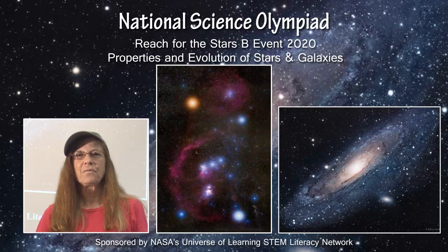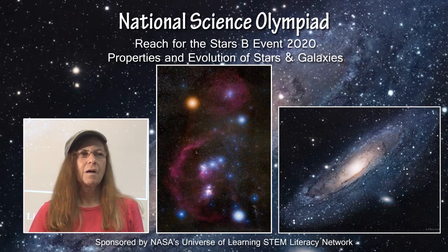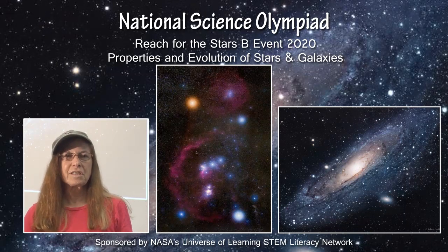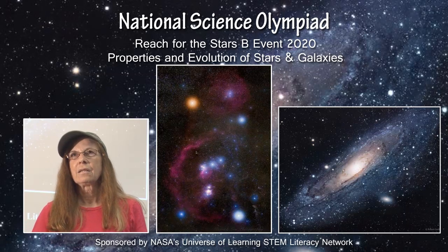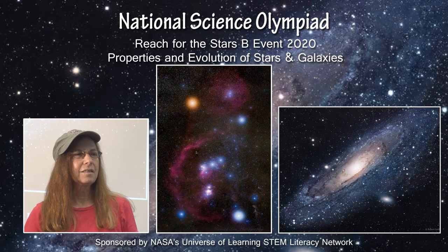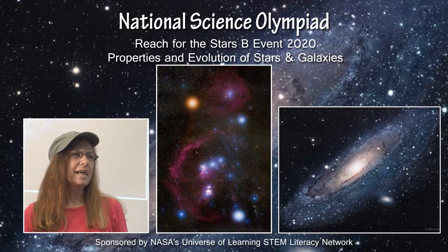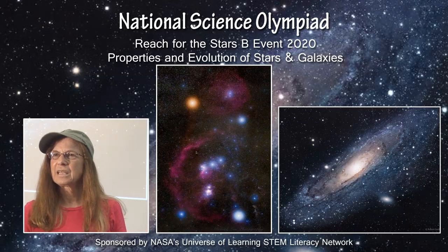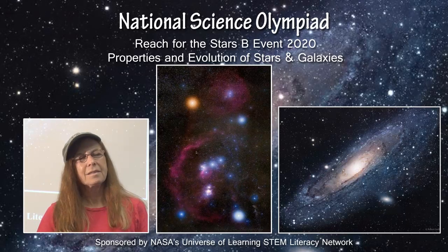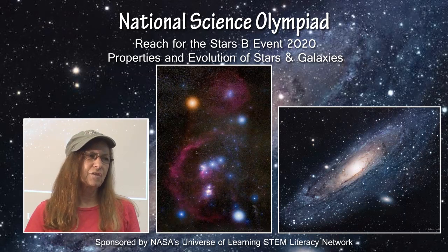The purpose of this webinar is to give a general, very general overview of the content and the resources for the Science Olympiad 2020 competition year. The competition is going to be held on May 15th and 16th at North Carolina State University in Raleigh, North Carolina. This particular webinar is discussing the middle school B division event, which this year is Reach for the Stars.